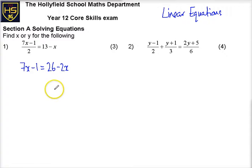Now I'm going to collect unknowns on the left, so I'm going to add 2x to both sides, which gives me 9x, and I'm going to add 1 to both sides, which gives me 27. So I've done two steps in one there.